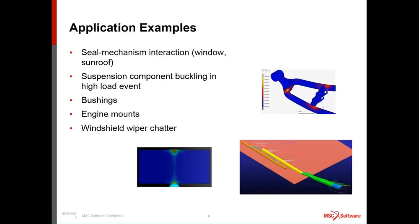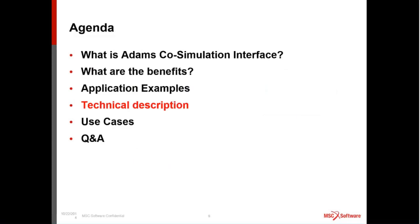Application examples include complicated window or sunroof mechanisms driving seals and interacting with them, suspension component buckling in a high loading event, rubber bushings or mounts or isolators in vehicles, and windshield wiper chatter. We'll talk through a few of these use cases in more detail following the technical description.